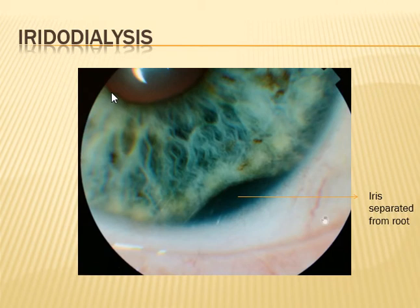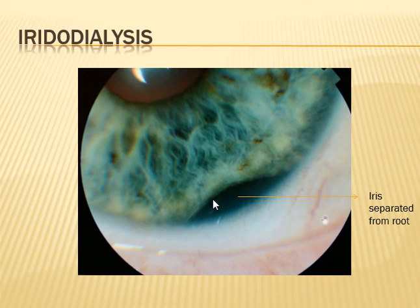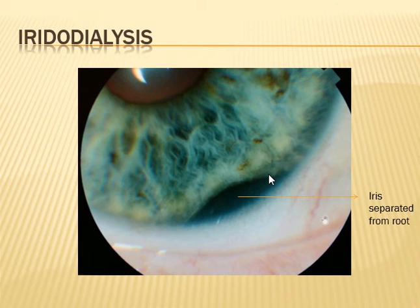Here you can see the pupillary margin and the limbus. The root of the iris, near the limbus, is separated from the limbal area. This is called iridodialysis, which means the separation of the iris from its root. The underlying dark area is the ciliary body. The most common reason for iridodialysis is trauma, either blunt trauma or penetrating injury, or sometimes it can be induced during cataract surgery.